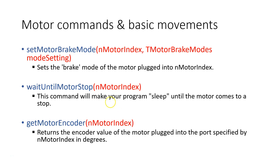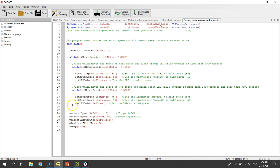The last motor command for this week is called getMotorEncoder, which accepts one argument: your motor index. This command returns the encoder value of the motor plugged into the specified port in degrees — it basically reads the encoder value of your motor. I have a slightly more complicated program here which uses the getMotorEncoder command. This program basically varies the motor speed and the LED color based on the motor encoder value.